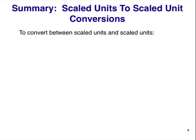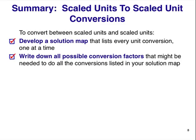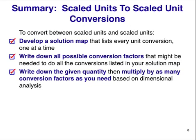There are several key things here. The first is a solution map. Use arrows to convert one unit at a time. Each arrow needs to be one conversion factor. Write down your possible conversion factors. You need only one for each conversion for your map. Write the conversion factor and its upside-down version too. You'll choose which one of the pair you actually need in the next step. Write down the given quantity and multiply by as many conversion factors as you need, keeping an eye that the units cancel.